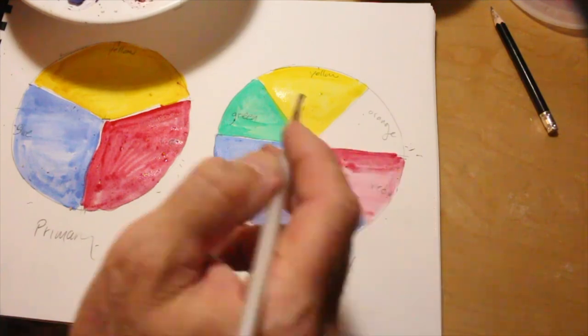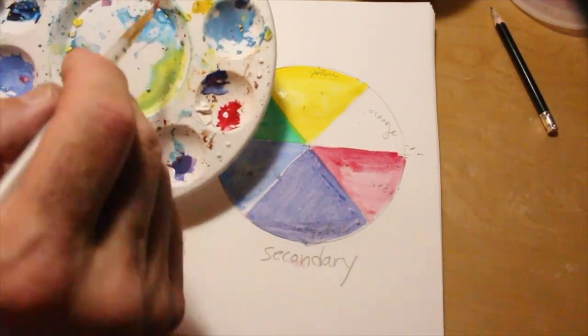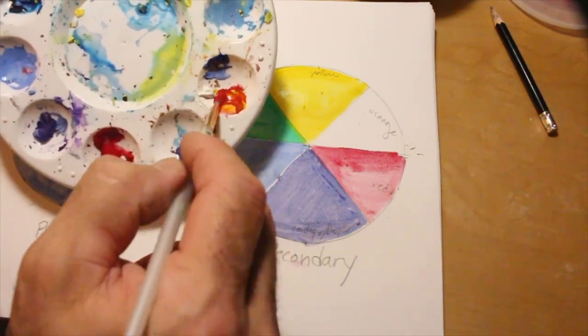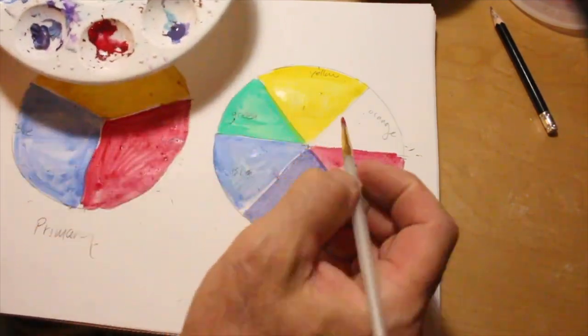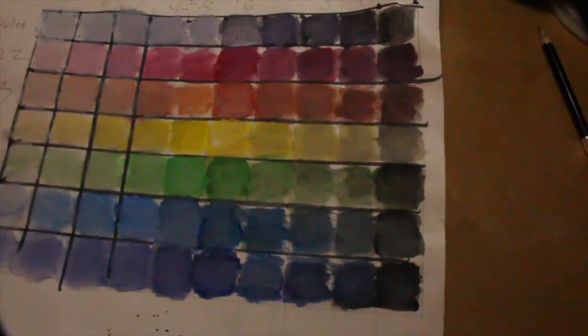To make orange, you mix red with a little touch of yellow. There you go. And now you have orange. Look at that. Isn't that nifty?